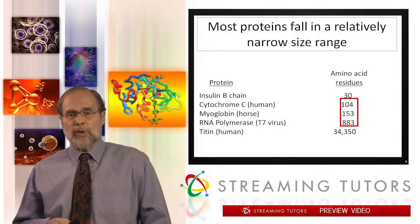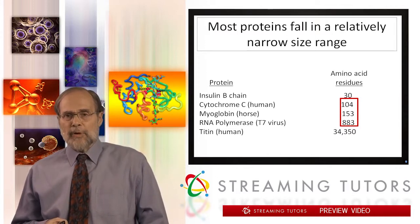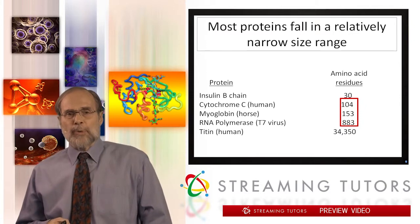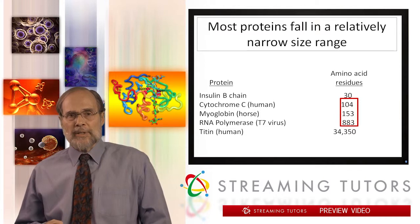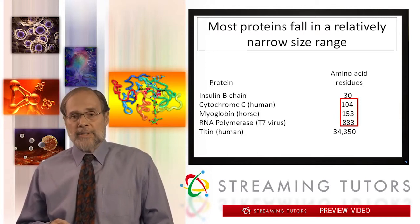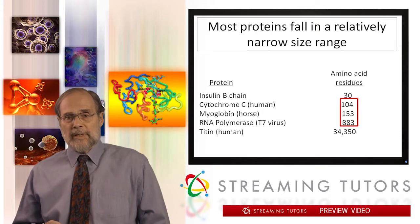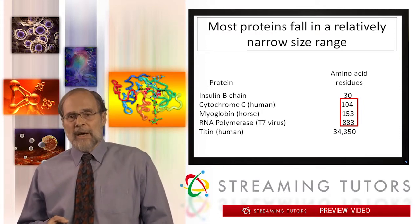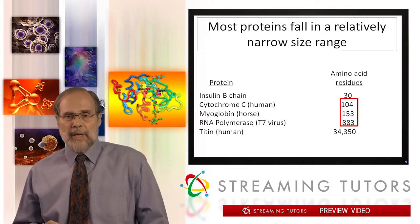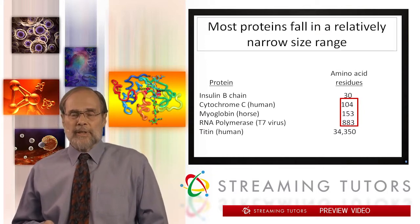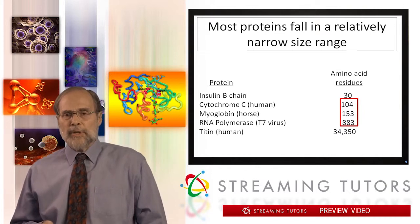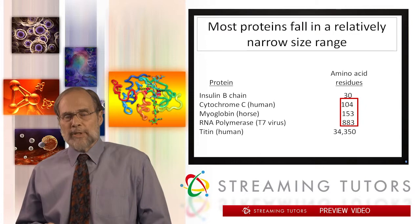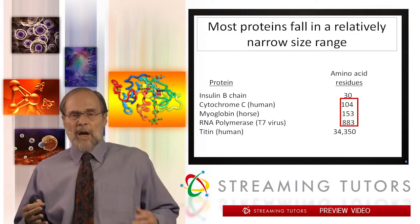Let me begin by giving you a sense of scale. There are five proteins on this little table, and the number of amino acid residues making up those proteins are indicated. The B-chain of the insulin hormone has 30 amino acids, up to a massive protein called titin — a muscle protein in humans — of over 34,000 residues. However, these two large and small proteins are quite unusual. The proteins in the middle of the table, ranging from 100 residues to roughly 1,000 residues, are much more common.